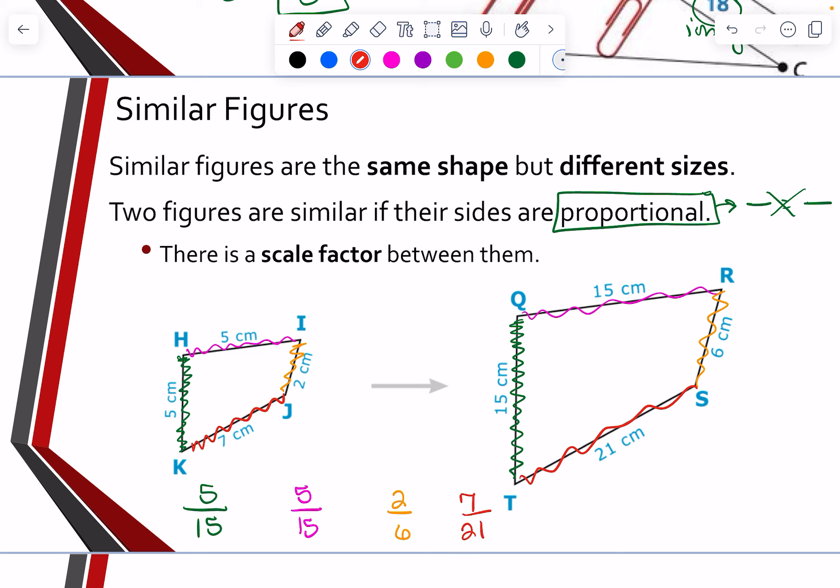But you might be looking at those going, but Mr. Waller, those aren't the same. Well, let's try them. What we're going to do is simplify if we can. Well, 5 goes into both 5 and 15. So that would simplify to one third. 5 to 15, that's going to simplify to one third. Here, 2 to 6. I can divide both of those by 2, and that gets me one third. Here I have 7 to 21. I can divide those both by 7, and I get one third.